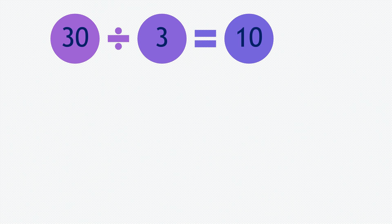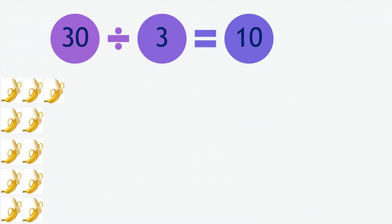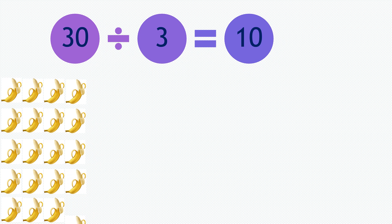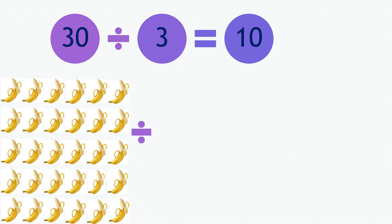Moving on to our last question. 30 divided by 3 equals 10. So if you have 30 bananas — 1, 2, 3, 4, 5, 6, 7, 8, 9, 10, 11, 12, 13, 14, 15, 16, 17, 18, 19, 20, 21, 22, 23, 24, 25, 26, 27, 28, 29, 30 — so if you divide them by 3 monkeys.